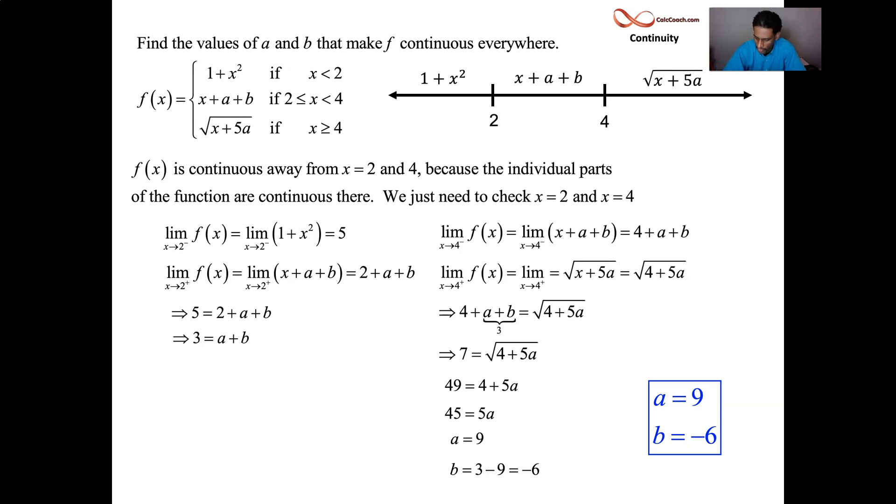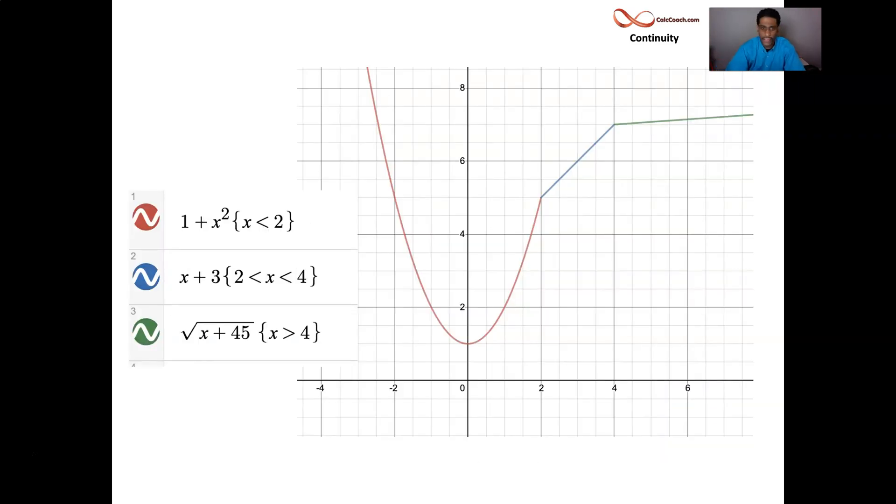And you can verify it. You can go in Desmos and graph it. Here's a nice way to graph piecewise functions in Desmos. Parabola meeting the line, meeting the root function. It doesn't look like the last one's a root function, but it is a root function. With a being 9 and b being negative 6, the functions end up being x plus 3 for the line and root of x plus 45 for the root function.